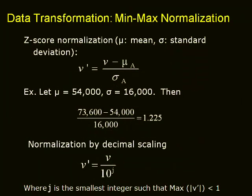Z-score normalization is also termed zero-mean normalization because we take the deviation about the mean, represented by mu, with sigma as the standard deviation. For example, if mu is 54,000 and sigma is 16,000, then V' for a given V of 73,600 can be replaced with 1.225. The values of attribute A are normalized based on the mean and standard deviation of A.